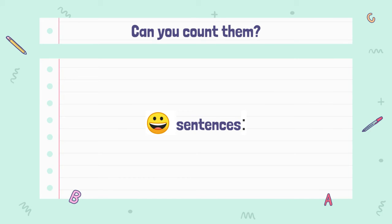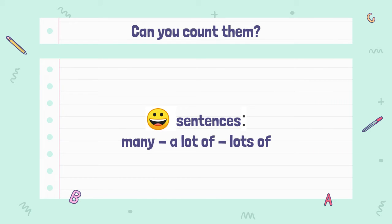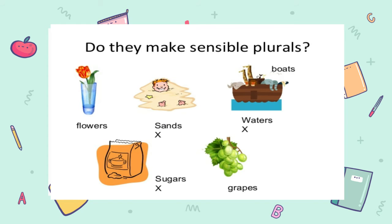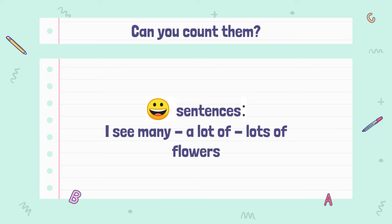So if you can count them, in a positive sentence you use many, a lot of, or lots of. For example: I see many flowers. I see a lot of flowers. I see lots of flowers. I see many boats. I eat many grapes. I eat a lot of grapes. These are all possible.